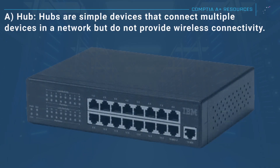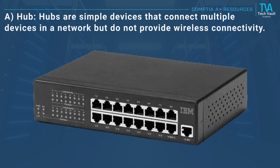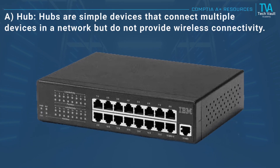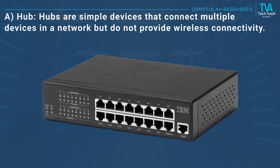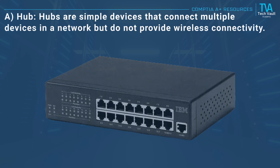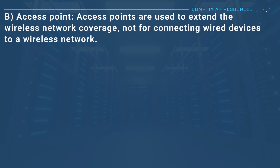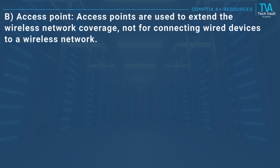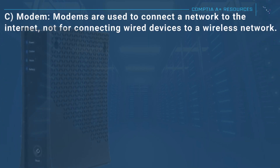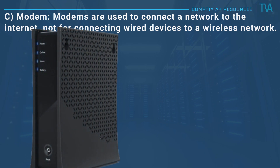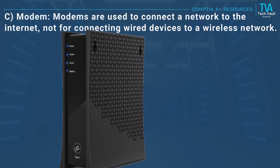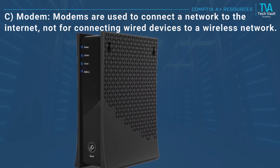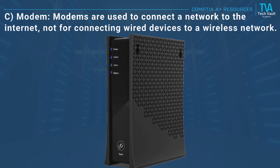A, hub: hubs are simple devices that connect multiple devices in a network but do not provide wireless connectivity. B, access point: access points are used to extend the wireless network coverage, not for connecting wired devices to a wireless network. C, modem: modems are used to connect a network to the internet, not for connecting wired devices to a wireless network.